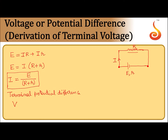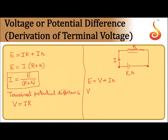Terminal potential difference is denoted by V, where V equals I times R. Substituting into the first expression, E equals V plus I times r (where small r is the internal resistance of the cell), so we get V equals E minus I times r.